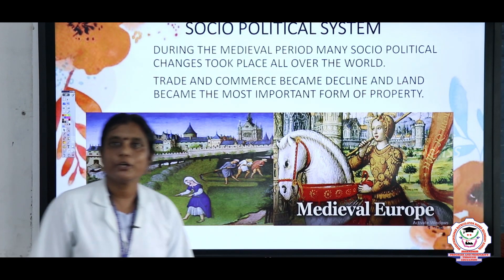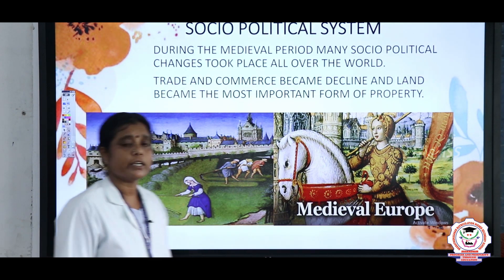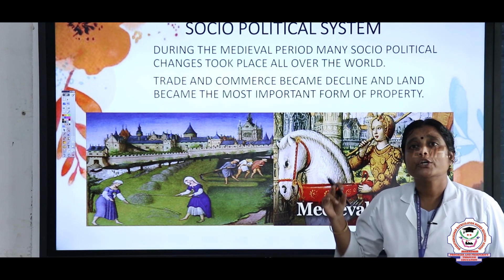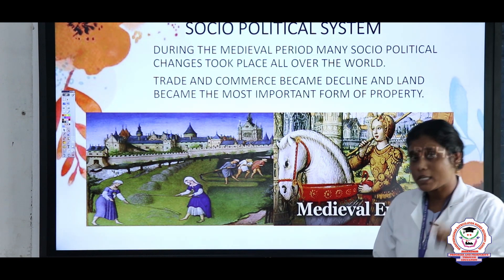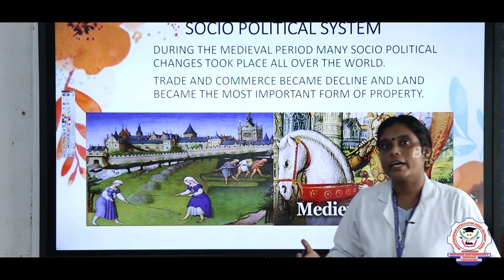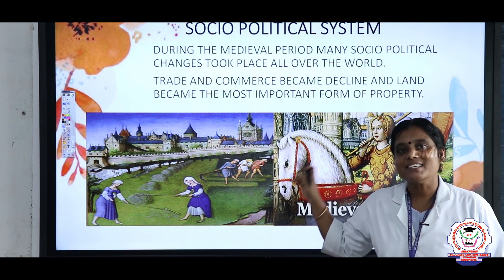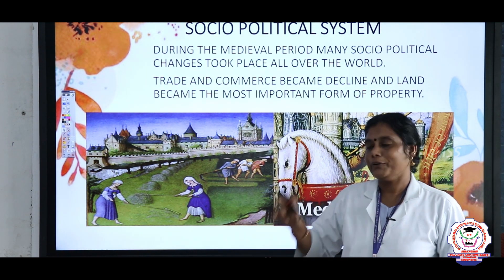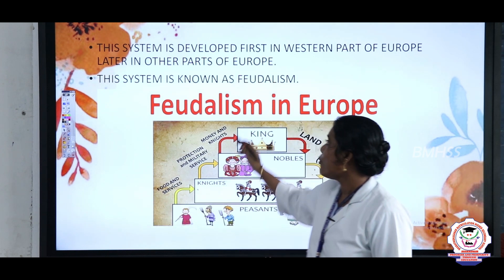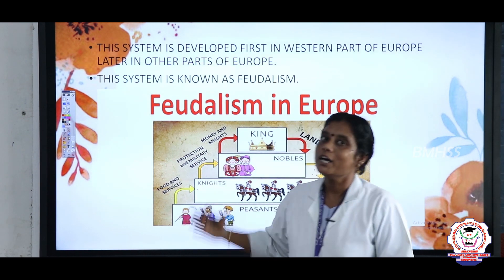Next: the socio-political system. During the medieval period, socio-political changes took place in the part of Europe. Especially, trade and commerce became declined and land became a very important form of property. This system is known as feudalism. The system in which getting land was very important is known as feudalism.